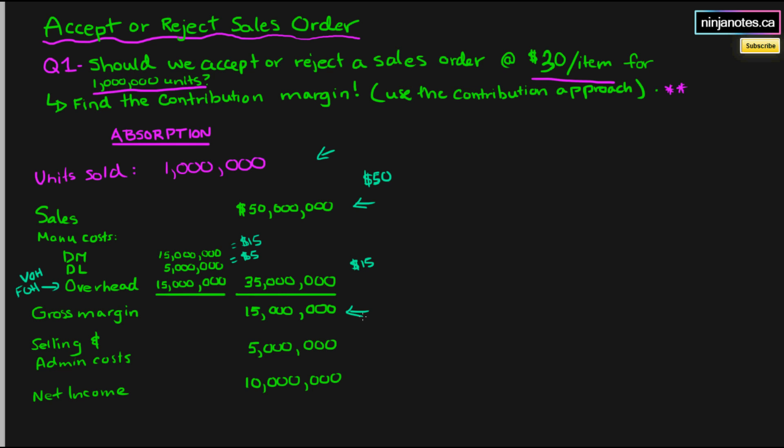Gross margin right here is fifteen million dollars. So looking at this income statement right here, should we accept or reject the sales order of thirty dollars an item?